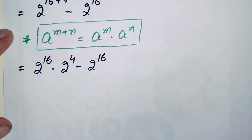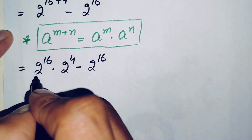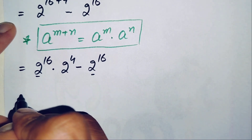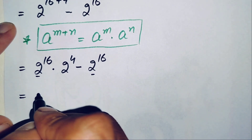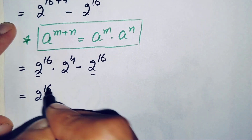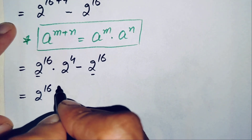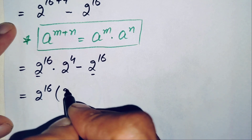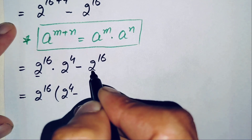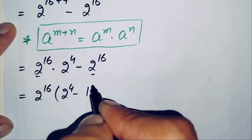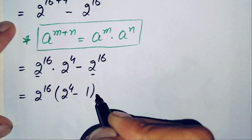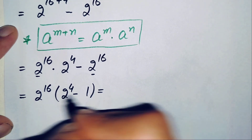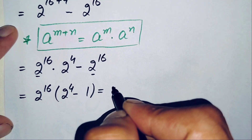Here, 2 raised to power 16 is common in both terms, so we take it out as a common factor. This gives us 2 raised to power 16 times (2 raised to power 4 minus 1).